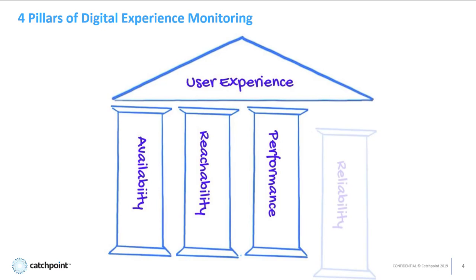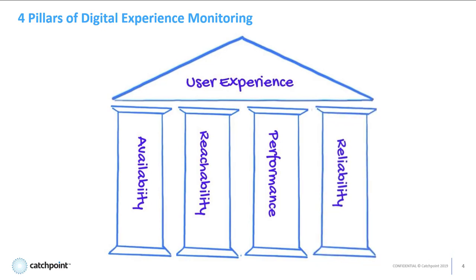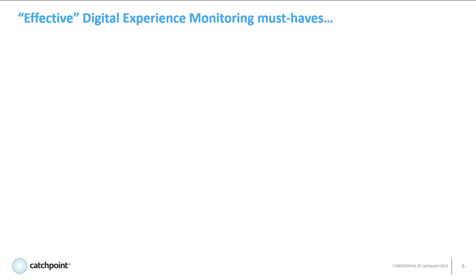And finally, there's reliability. You need to make sure availability, reachability, and performance are all happening well over time. So focusing on just the AWS cloud leaves a ton of blind spots. To eliminate those blind spots and provide effective DEM, you have to do monitoring according to the real world and with a user-centric focus, covering all four pillars of end user experience.